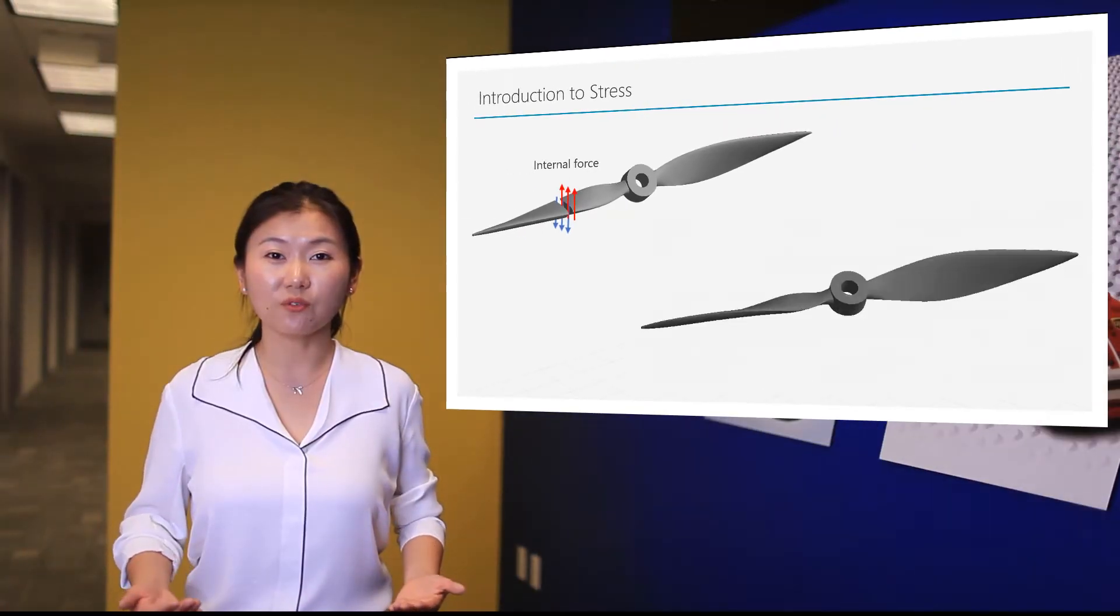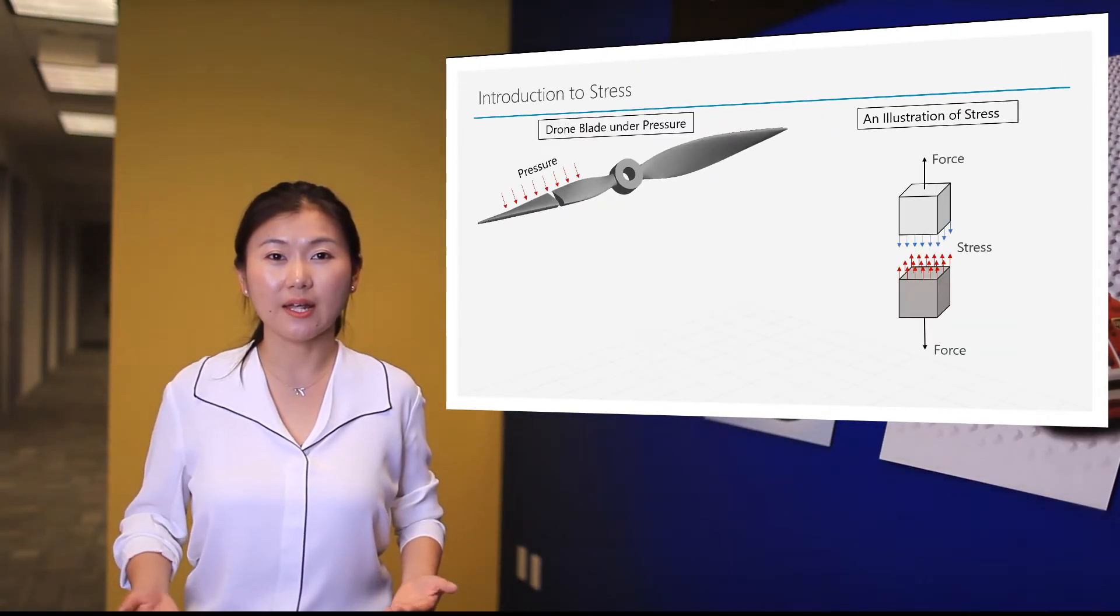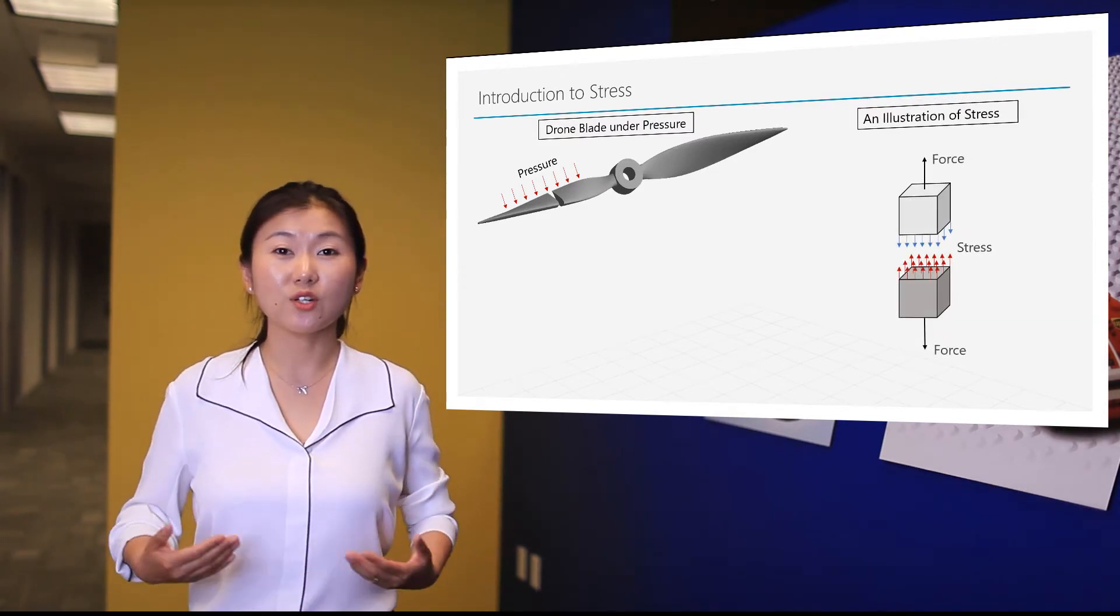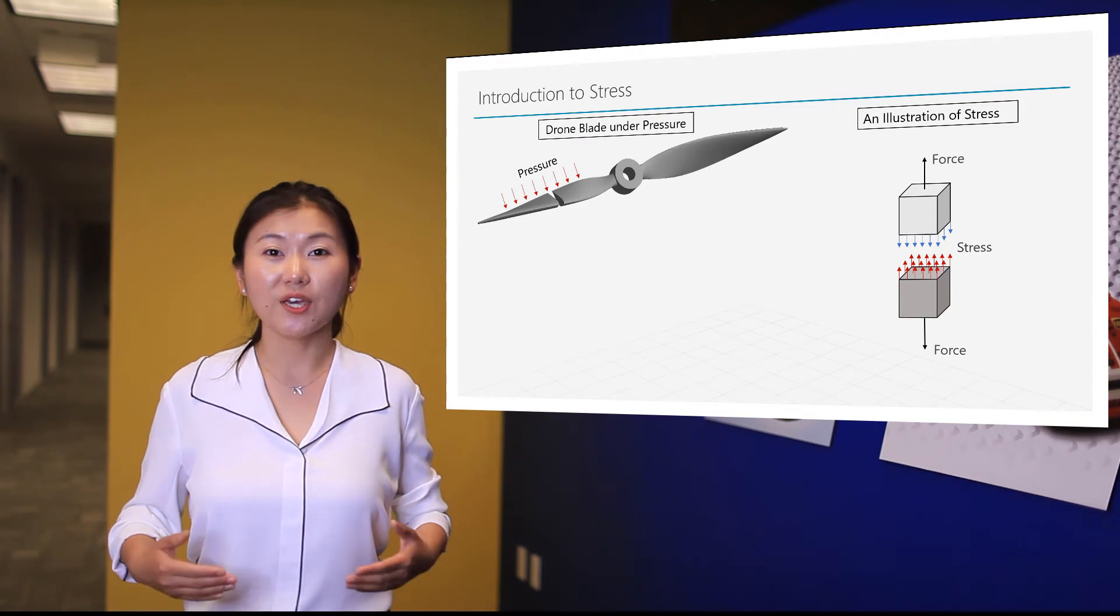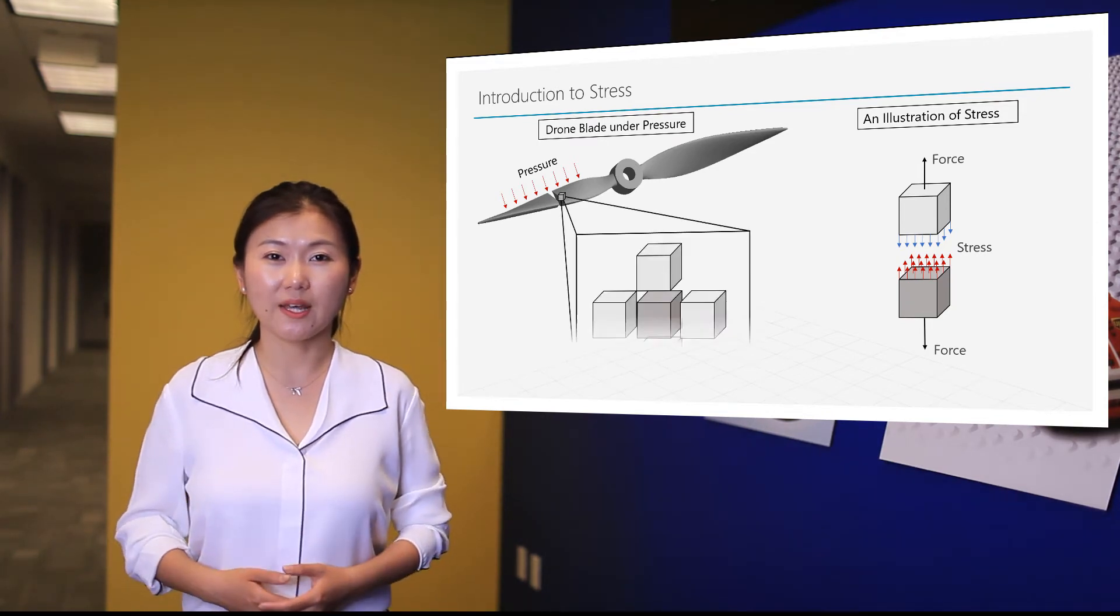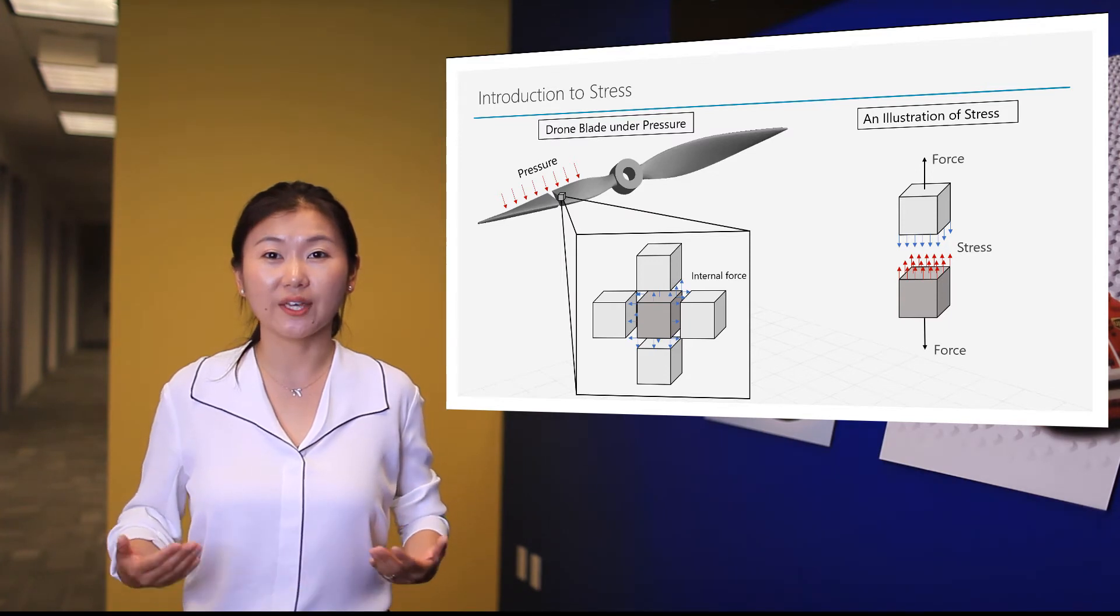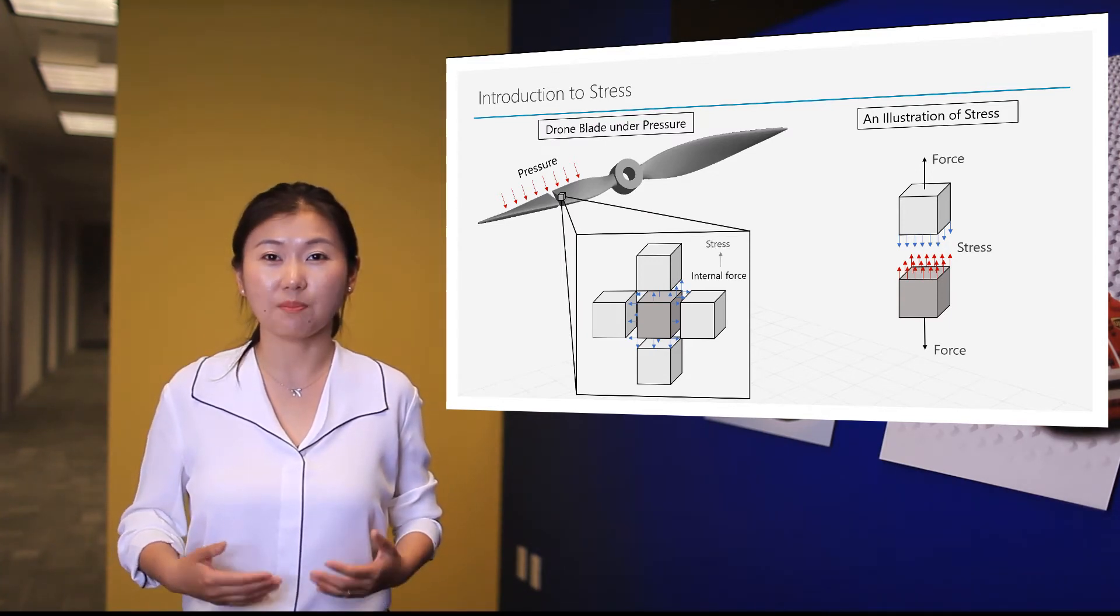To describe the internal force in a body under deformation, the quantity we use is stress. So when the drone blade is under load, for each internal particle over the body, the neighboring particles exert force to it, which is called internal force and is captured by the quantity stress.